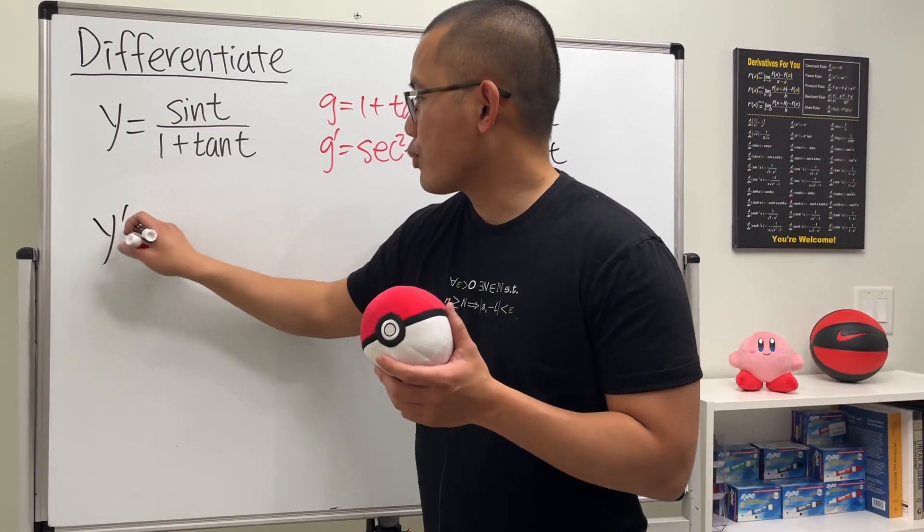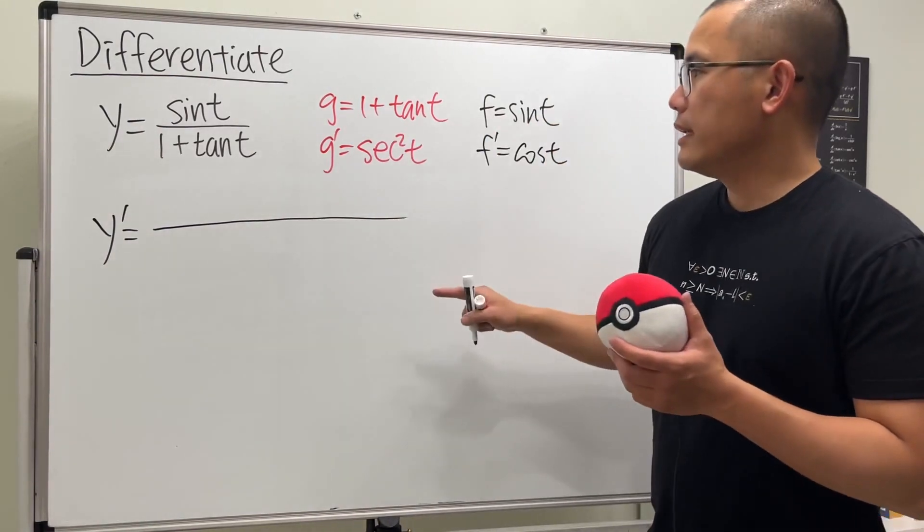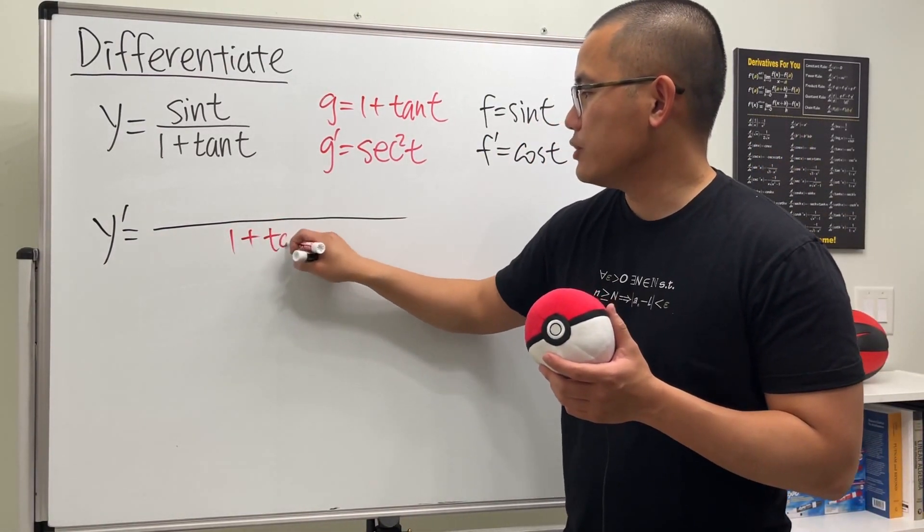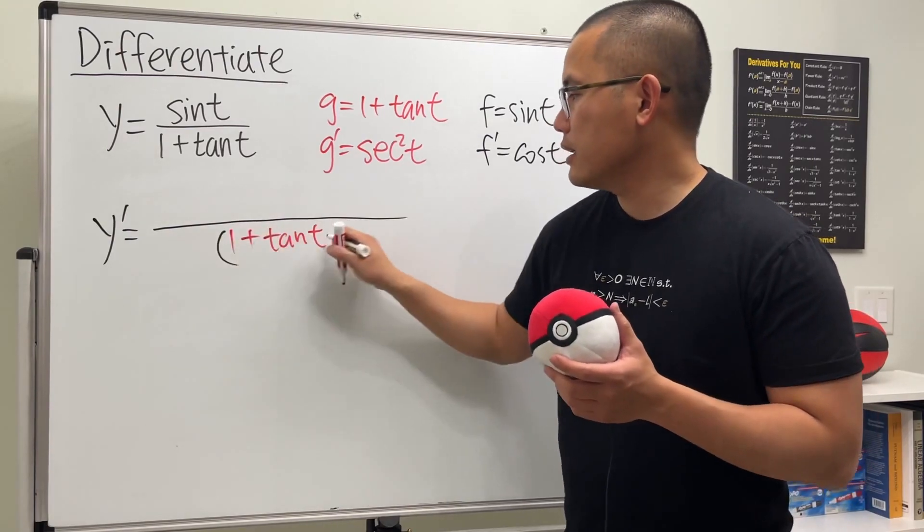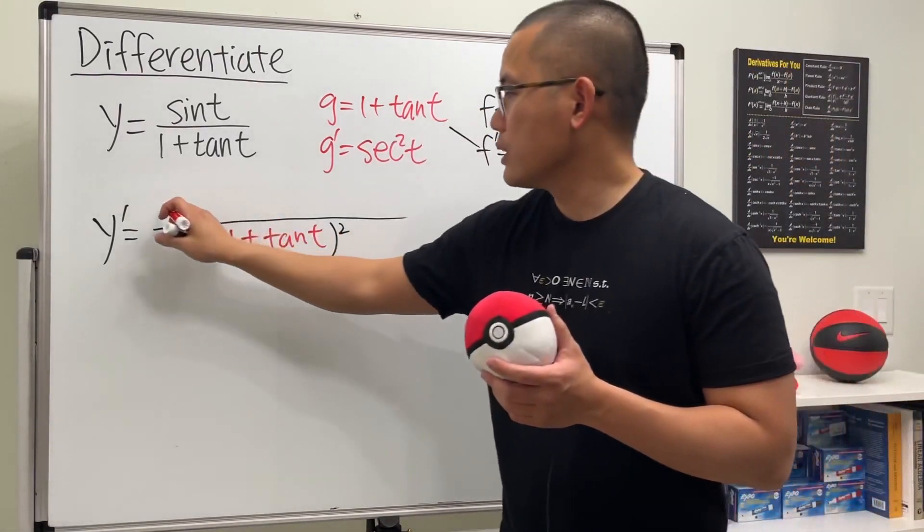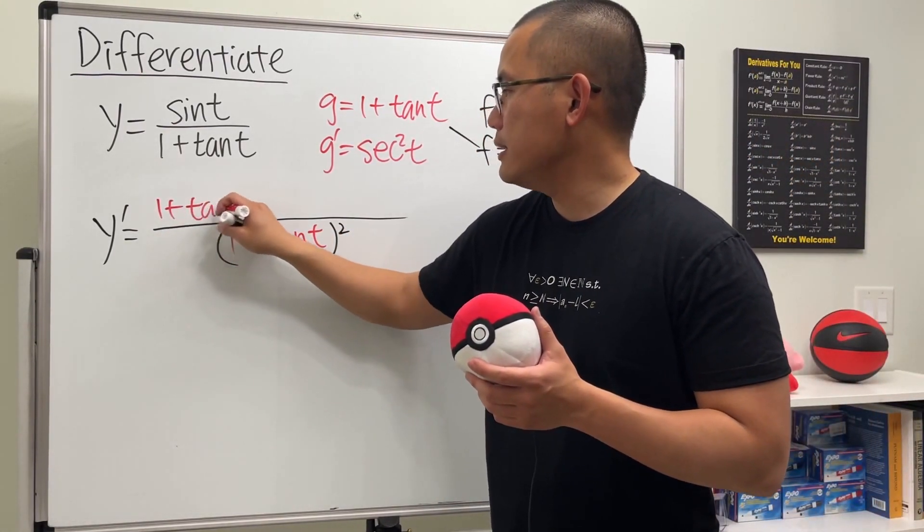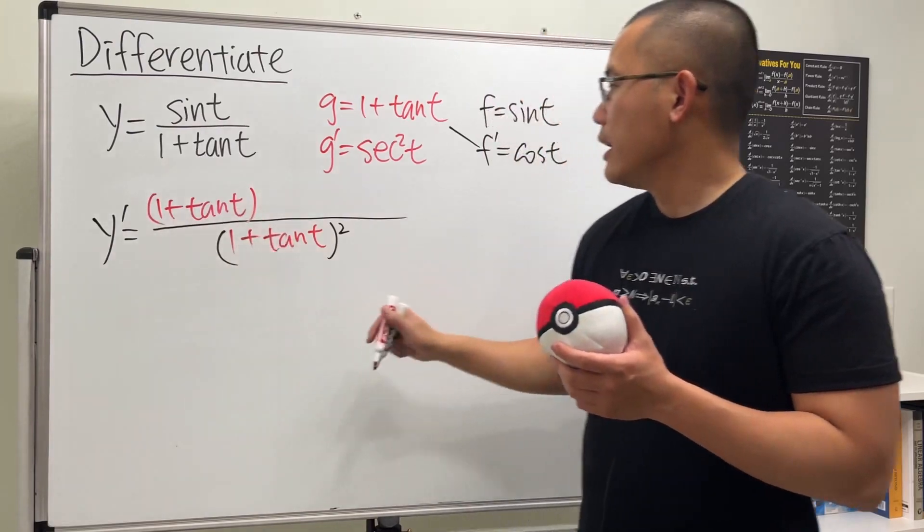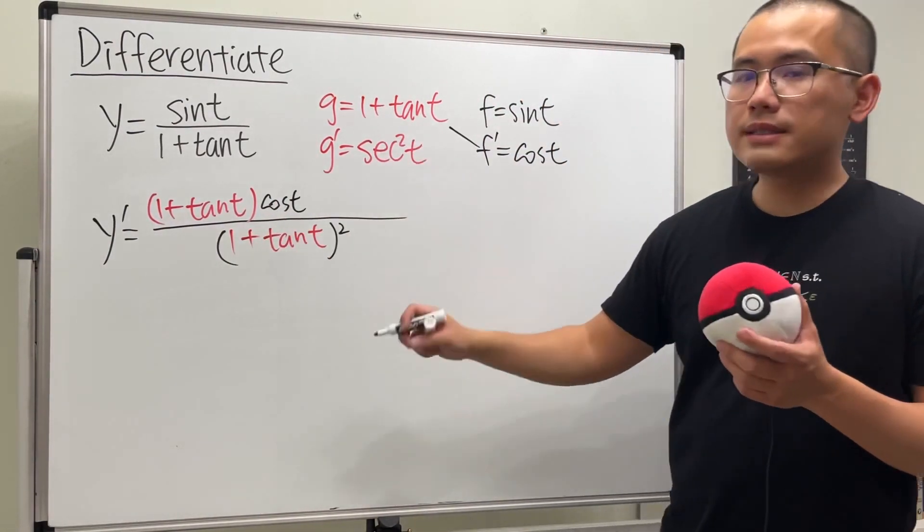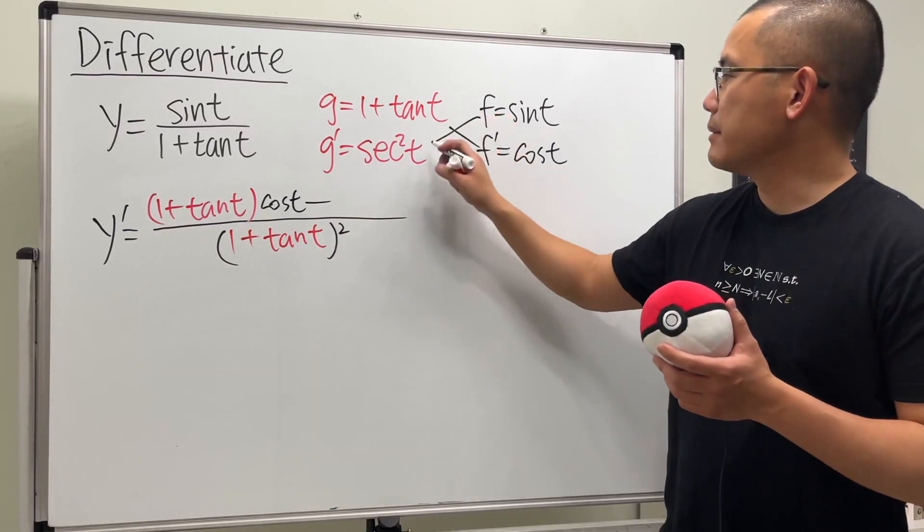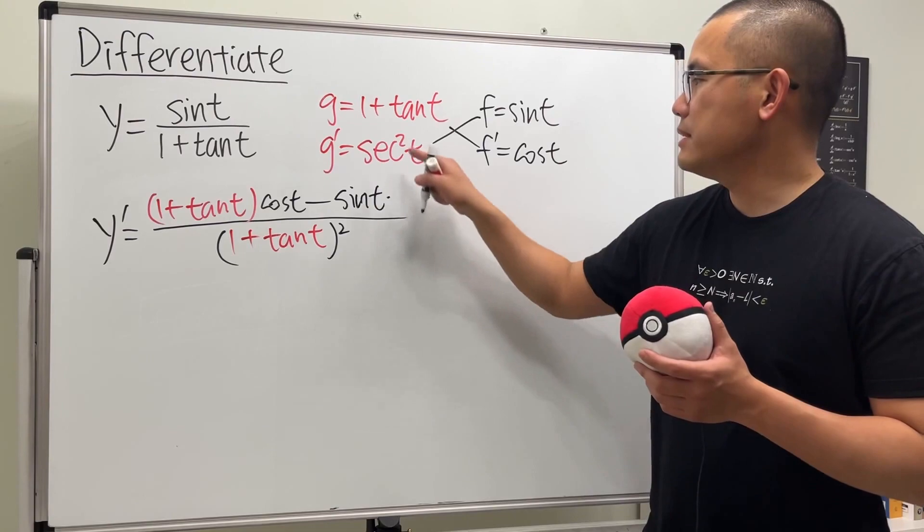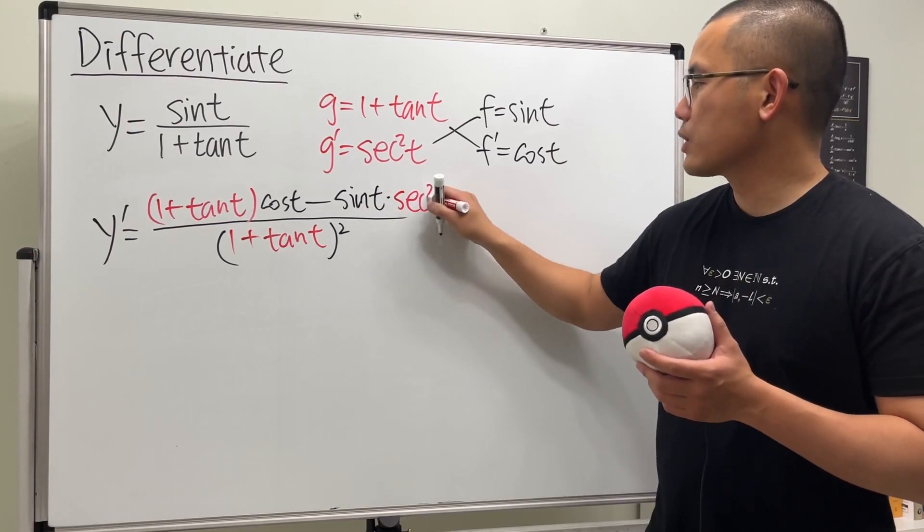Okay, y prime. Let's go ahead and square the bottom function, which is 1 plus tangent t, and then again, let's go ahead and square that. And we do this times that, and again, two times, so we have to put this down in your parentheses, like this. And then right here, we multiply by cosine t. Next, we are going to minus this times that, which is sine t times secant square t.